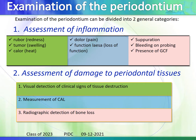The examination of the periodontium can be divided into two general categories: assessment of inflammation — the five cardinal signs being rubor, tumor, calor, dolor, and functio laesa — along with suppuration, bleeding on probing, and presence of gingival crevicular fluid. The second category is assessment of damage to periodontal tissues, done by visual detection of clinical signs of tissue destruction, measurement of clinical attachment loss, and radiographic detection of bone loss.